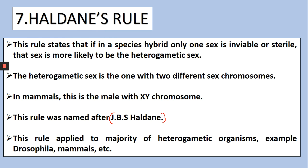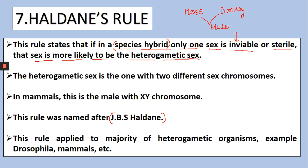If in a species, a hybrid only one sex is inviable or sterile, that sex is more likely to be the heterogametic sex. If you are talking about a hybrid species — for example, if you consider horse and donkey, their hybrid is the mule (which we call खच्चर in Hindi) — the mule is inviable or sterile, meaning it cannot give birth to offspring. If you look at its genetic profile, you will find that in such organisms in hybrid species, it is more likely to be the heterogametic sex. Heterogametic sex means the one with two different sex chromosomes.